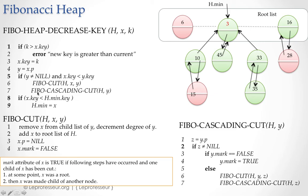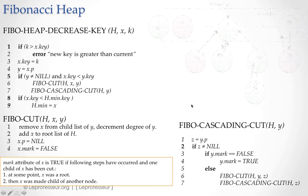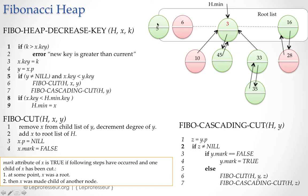Now after that we would execute the cascading cut procedure. Let's say here we wanted to decrease 15 to 5, so we chop it off and put it in the root list. Notice that 15 was marked, so we cleared the mark as in the Fibonacci cut subroutine. Then we executed cascading cut and this node 10 was unmarked, so we marked it and exit out from line number 7.